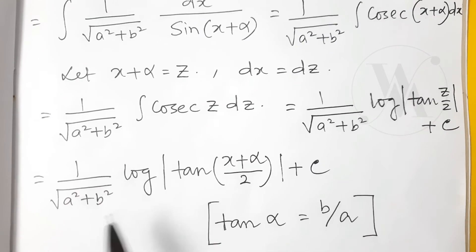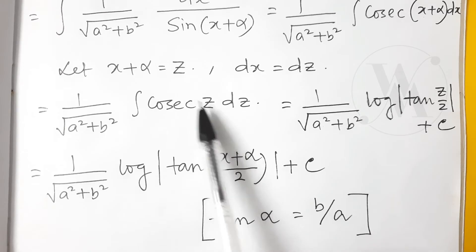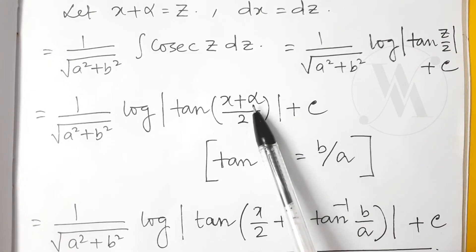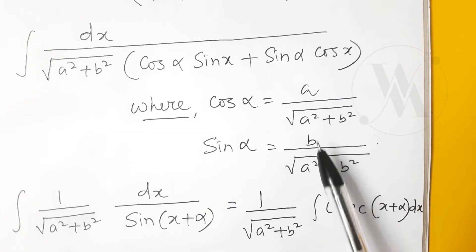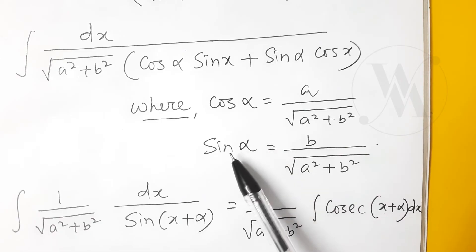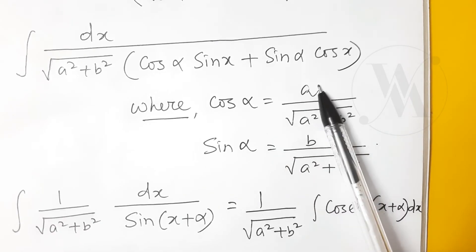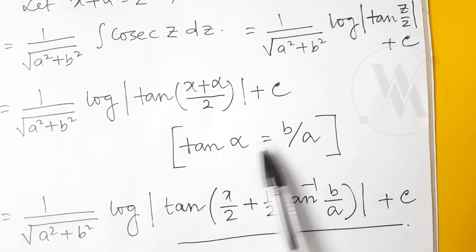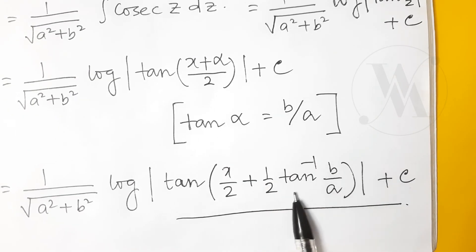Now we want to get x back, so instead of this z we are putting x plus alpha. Now we also have to substitute this alpha. In this equation, what is the value of tan alpha? Sin by cos, that will be b by a. So what is the value of alpha? Tan inverse b by a. So instead of this alpha we are just substituting tan inverse b by a.